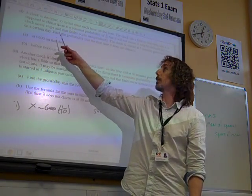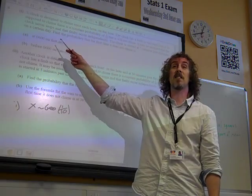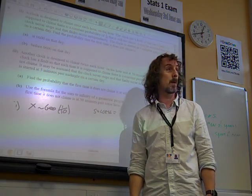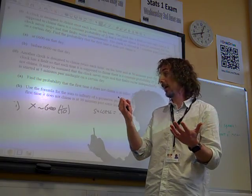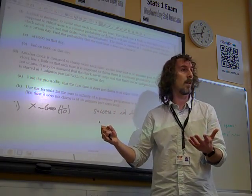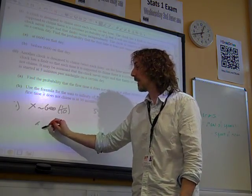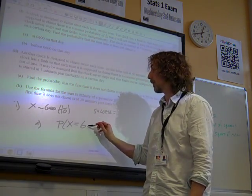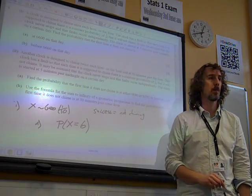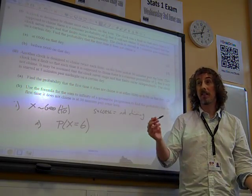The probability that the first time it doesn't chime is at 6 o'clock. Well, that's 1 o'clock, 2, 3, 4, 5, 6. That's when it's the sixth opportunity. So, part A is really just saying, find the probability that x equals 6, which in a geometric progression is easy, isn't it?